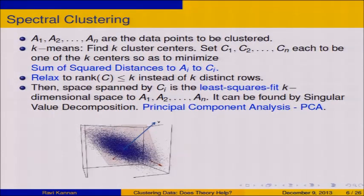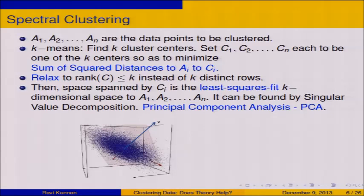I can find the best least squares fit K-dimensional subspace — even though I couldn't solve the original problem, I can solve what's called this relaxation. So instead of finding the K cluster centers minimizing the sum of squared distances, PCA found us the K-dimensional subspace minimizing the sum of distances. This is principal component analysis — PCA. The natural next step, intuitively, is: I found this space, I project down to it, and then cluster there.